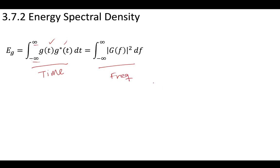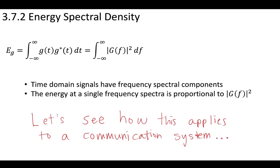Let's take this a step further and see how much energy is actually contained in some band f. This is going to be defined as the energy spectral density. Time domain signals have frequency spectral components, and the energy at a single frequency spectra is proportional to the square of its magnitude at that frequency. The energy in a band is proportional to the square of the signal in the frequency domain — this is an energy per band, which is a type of density.